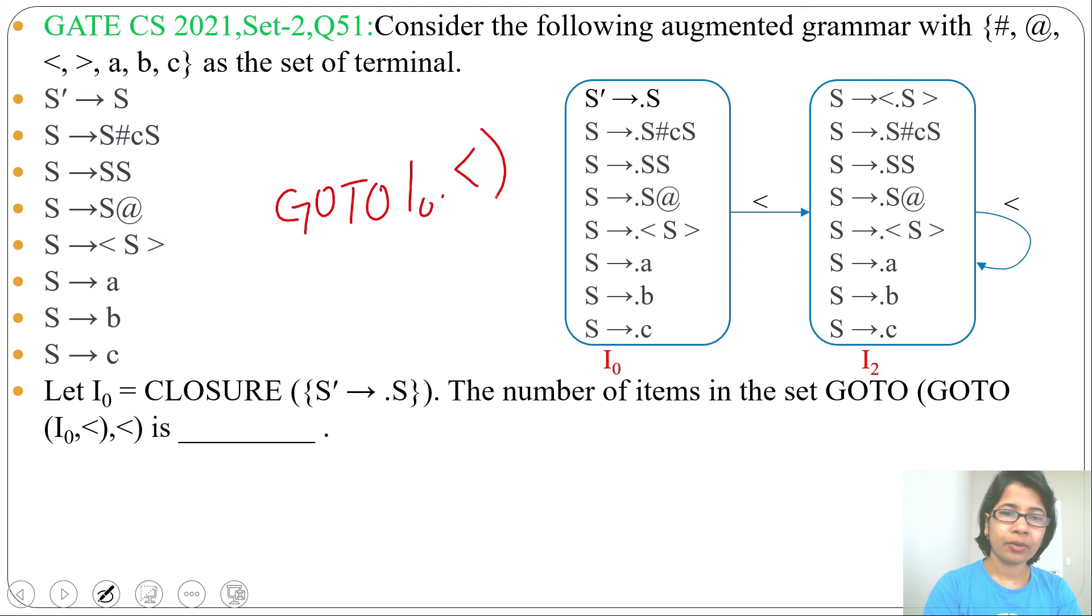So from I2 by less than symbol it will go to again I2. GOTO of I0 less than, that will go to I2. Again GOTO of I2 less than symbol, that will be I2. And it is asking number of items in this set.